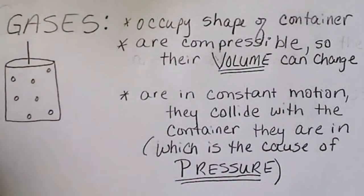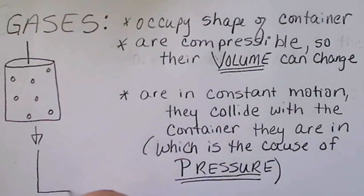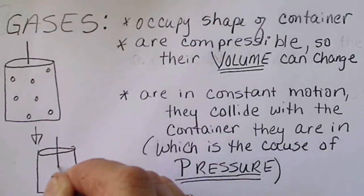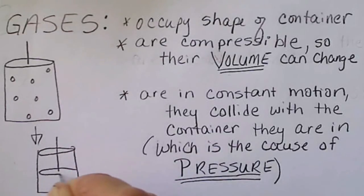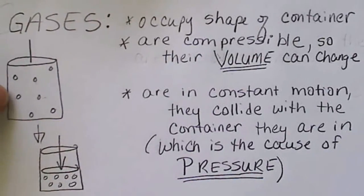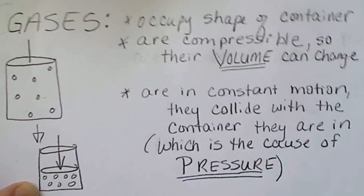For example, by pushing down on a piston like this. If this was a piston and we pushed this down, so that the seven moles of a gas that were in this container could be compressed, and so the volume could change by the application of pressure.